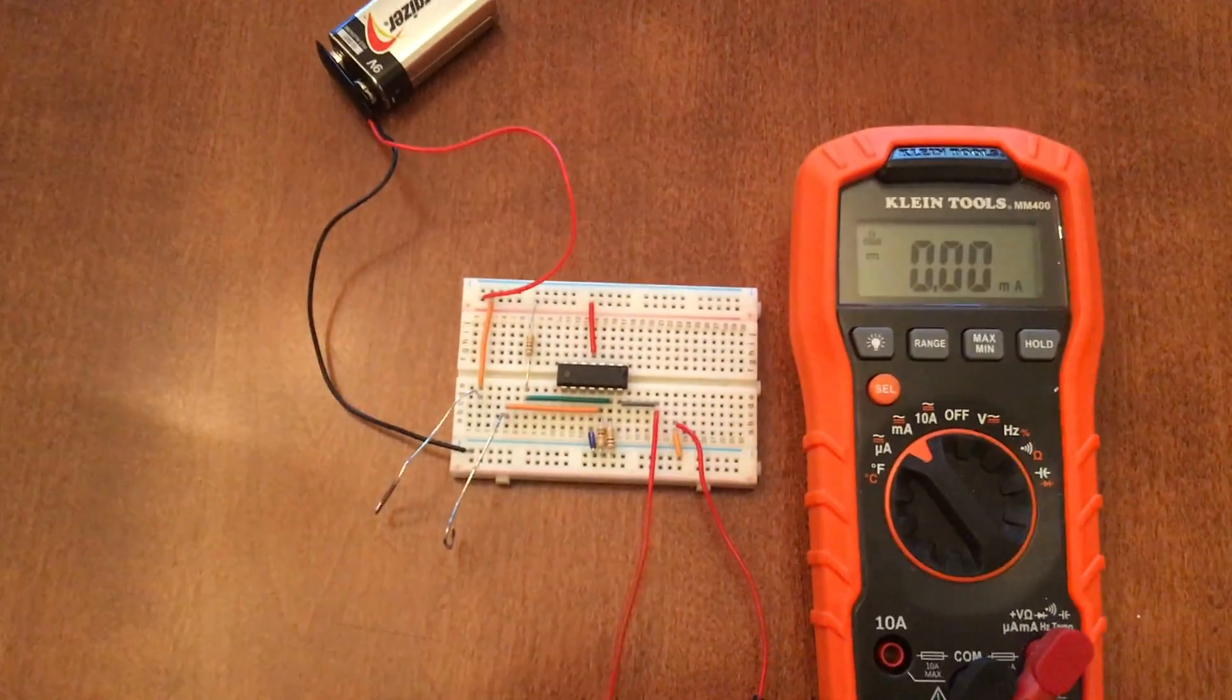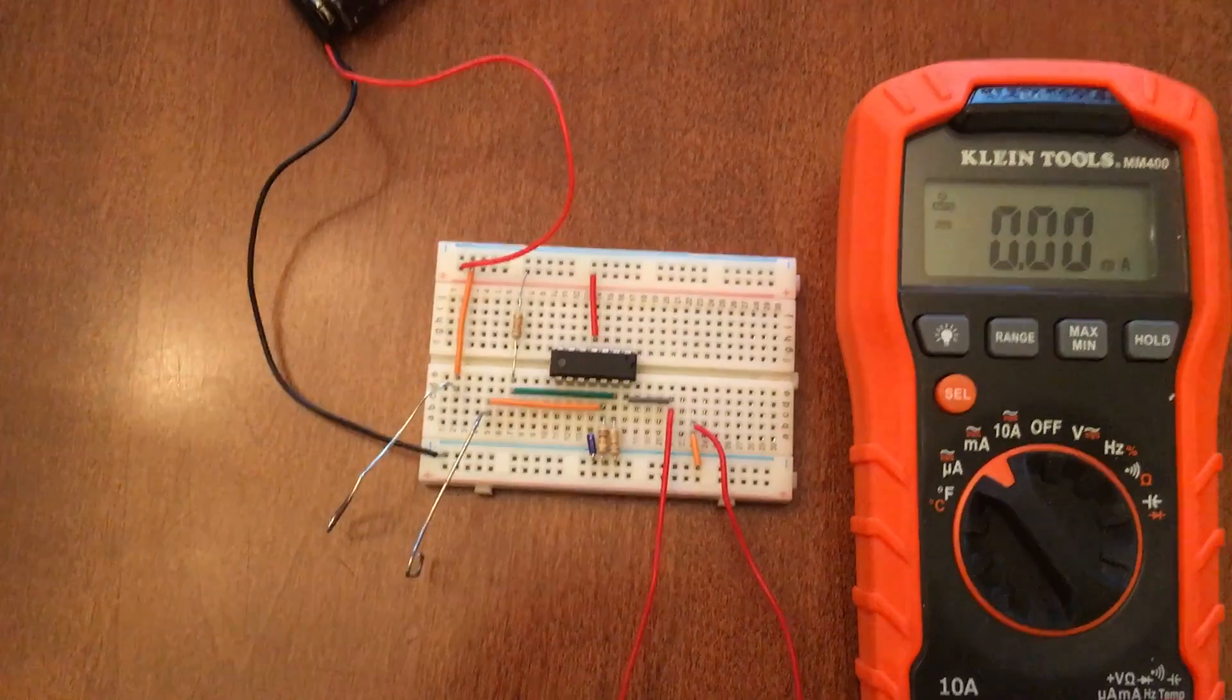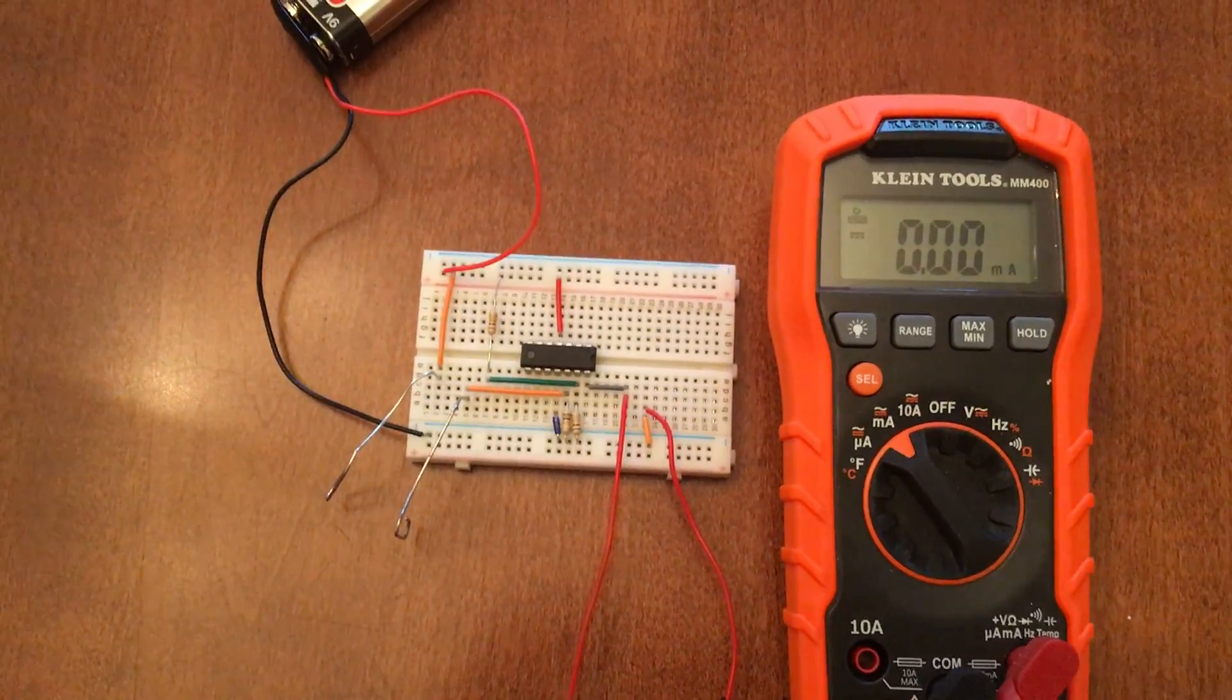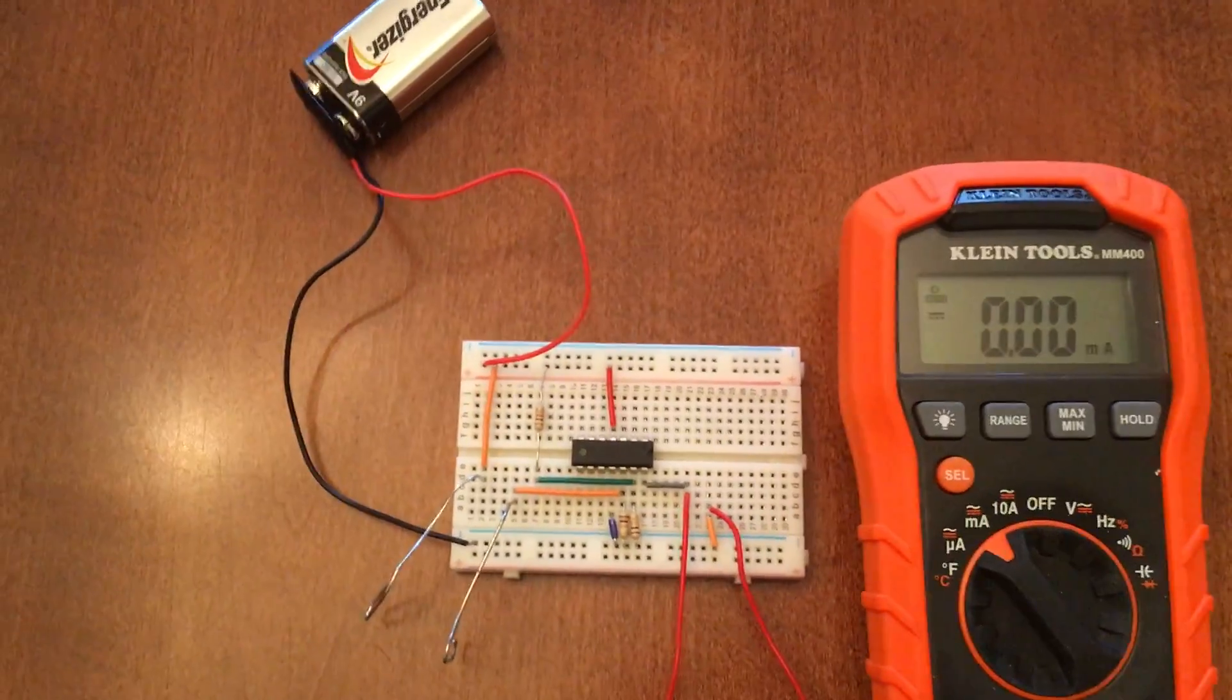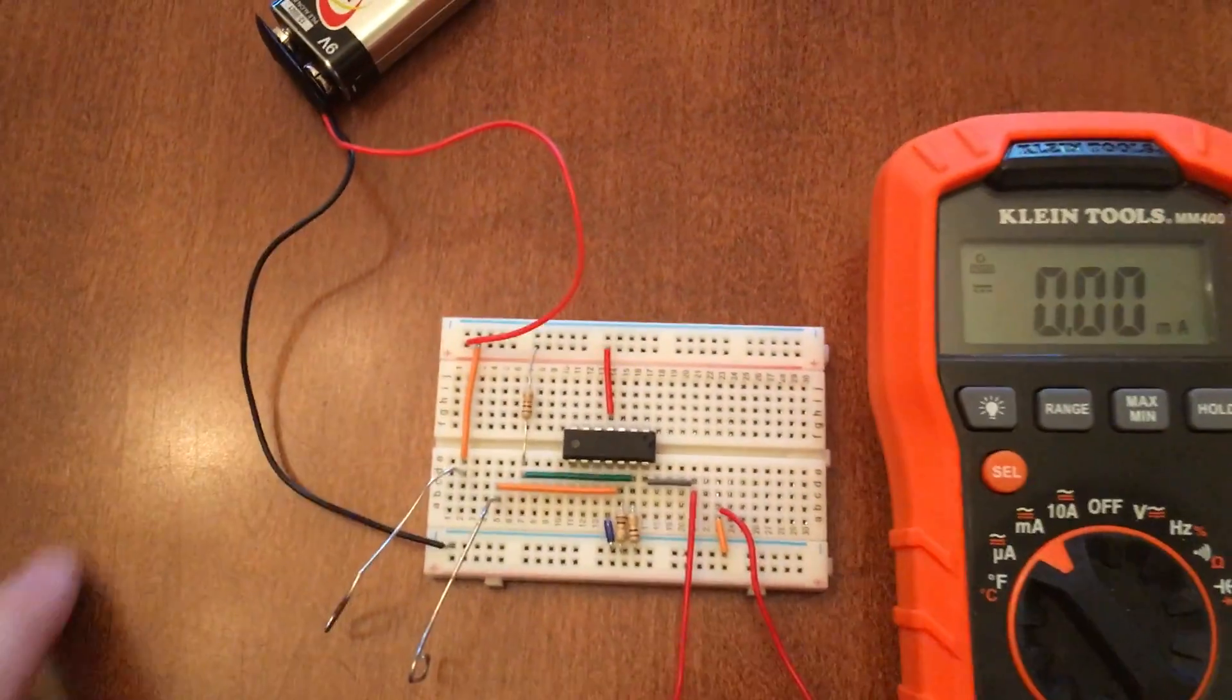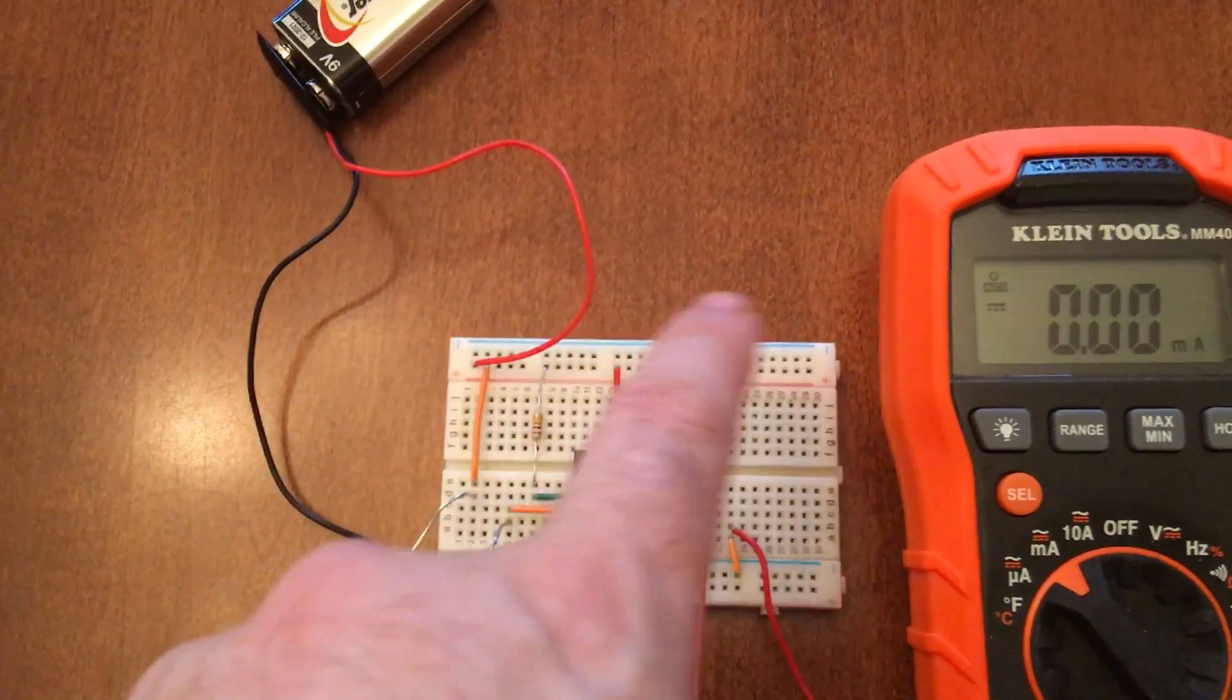Okay, what we have here is a simple circuit detecting touch, and the output is going into a multimeter. It could easily go into an LED or anything else. The way it works is we have the power coming along this top rail and it splits off.